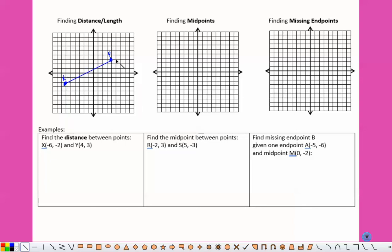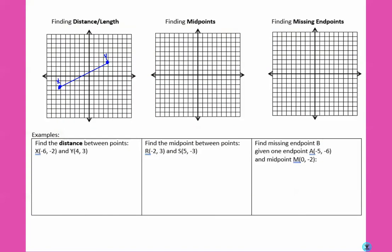So we want to know the distance between. Now because this is a diagonal line, we can't just count the boxes. What we can do, and what I think is the easiest way, is to turn this into a right triangle. So I'm going to go straight down from y, and straight over from x.